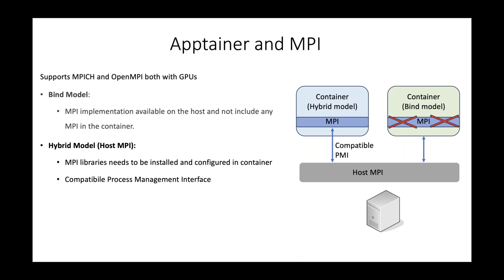The main problem with containers arises when using MPI across several nodes on a large HPC system with proper interconnections. There are two different models for using MPI inside containers with Apptainer. Apptainer supports two MPI implementations — MPICH and Open MPI — both with GPU support. In the bind model, you install your MPI version inside the container and build your application against it. Alternatively, you don't install MPI in the container but link the MPI version on the host system, which creates portability problems if the container is moved to a host where MPI is installed in a different directory.